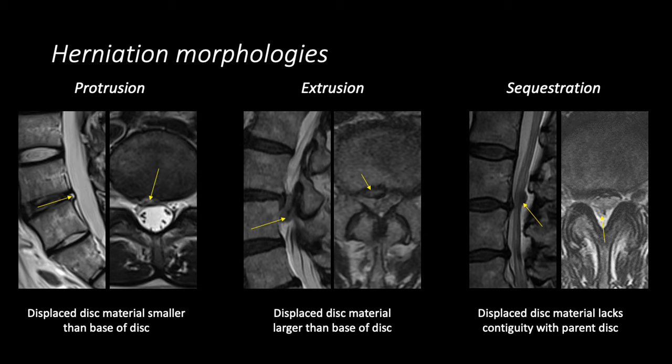Herniations can have different morphologies. A protrusion exists when the herniated disc material is smaller than the base of the disc. An extrusion exists when the displaced or herniated disc material is larger than the base of the disc. You can even have a sequestration where the disc herniation loses contact or contiguity with the parent disc. In this example, we see disc material within the dorsal epidural space on both the sagittal and axial images.